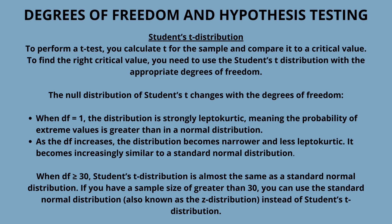When df ≥ 30, Student's t distribution is almost the same as a standard normal distribution. If you have a sample size greater than 30, you can use the standard normal distribution — also known as the z-distribution — instead of Student's t distribution. This change in the distribution's shape makes intuitive sense: the t distribution has less spread as the degrees of freedom increase because the certainty of the estimate increases. Imagine repeatedly sampling the population and calculating Student's t — the larger the sample size, the less the test statistic will vary between samples.